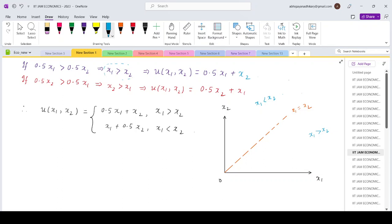So basically we need to plot the indifference curves in each of the parts and this will give us the complete indifference map. So let us plot the indifference curve for one part. Let us consider the lower part for x₁ greater than x₂.